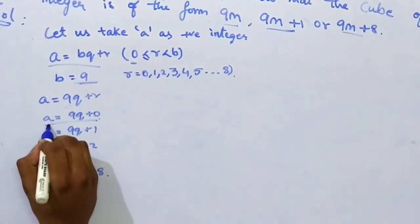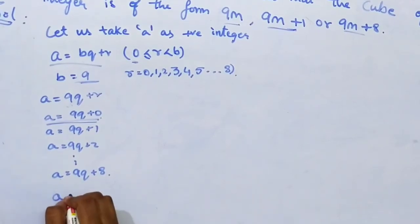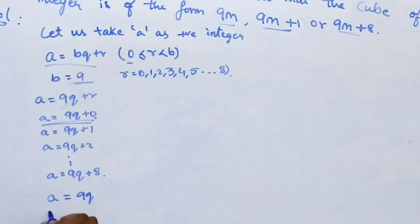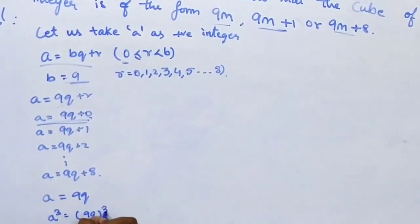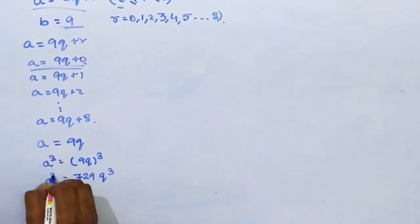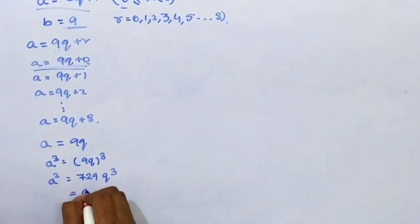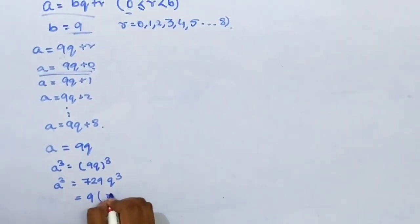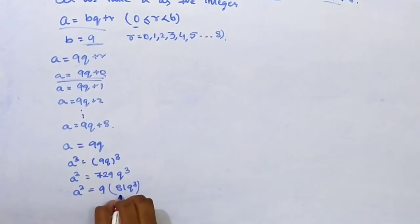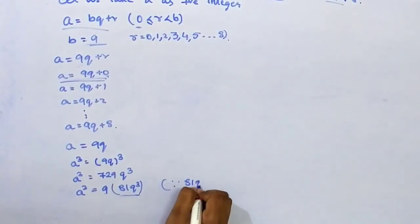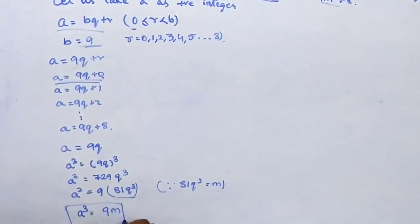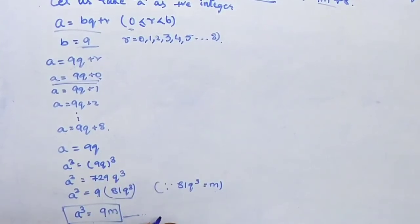From A = 9Q, cubing: A³ = (9Q)³ = 729Q³. Taking 9 as common: A³ = 9(81Q³). Considering 81Q³ as M, we get A³ = 9M.